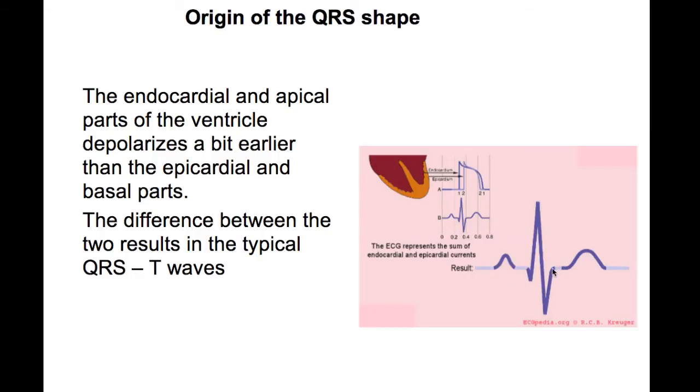During the repolarization phase, there is no difference in the action potential height between all these different cells. So there is no electricity seen on the surface ECG and the ST segment is over the baseline. And then during the T wave, there is again a difference between all these timings in the ventricles, and you see a T wave on the surface ECG.